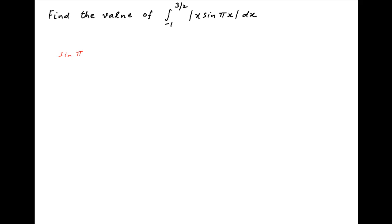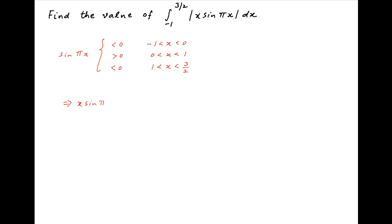We start by noting that sin(πx) is negative when x lies between -1 and 0, because πx lies in the third or fourth quadrant when x is in that range. Similarly, sin(πx) is positive when x lies between 0 and 1, because πx is in the first or second quadrant. And finally, sin(πx) is negative when x lies between 1 and 3/2, because πx lies in the third quadrant when x is in that range.